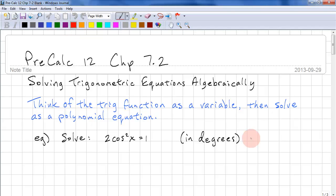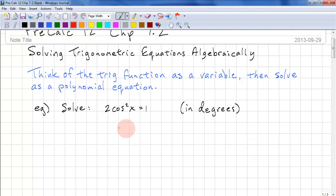Here's an example. Solve 2 cos squared x equals 1 in degrees. We simplify first. We have cos squared x equals 1 half.